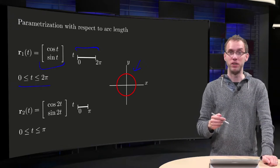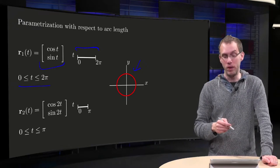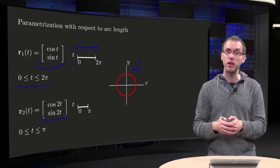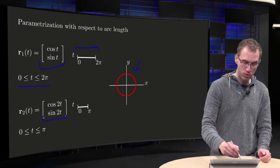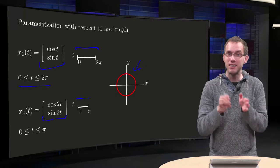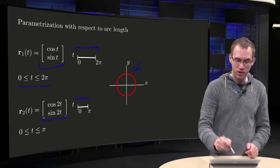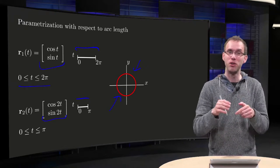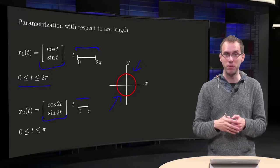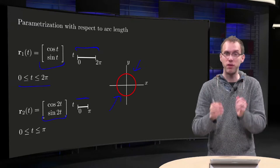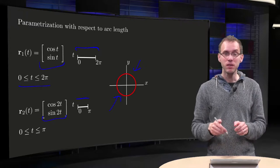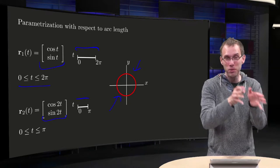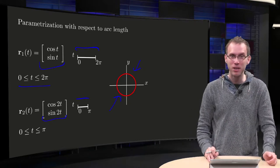We can also use another parameterization of the unit circle — for example cos 2t, sin 2t. Again x squared plus y squared equals 1, but now t runs from 0 to π. Now the length in the parameter domain is just π, and still the length in the xy plane is 2π. So in this second parameterization you are going faster through the parameter domain than in the xy plane. In the first case we already had a parameterization going as fast in the parameter domain as in the xy plane. But how can you do that in general?